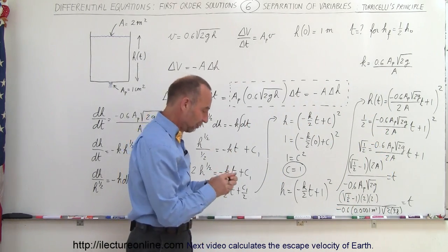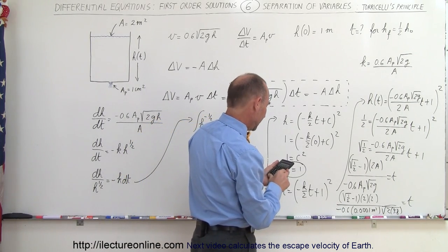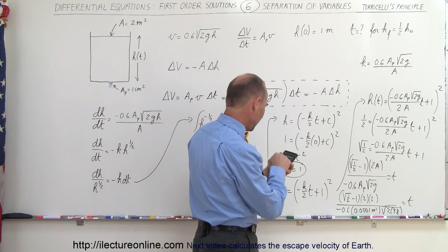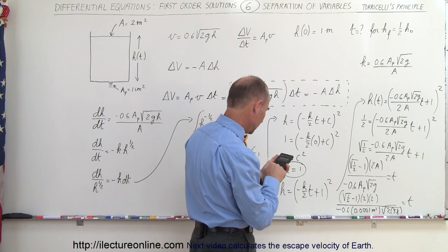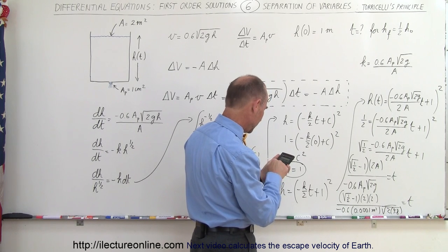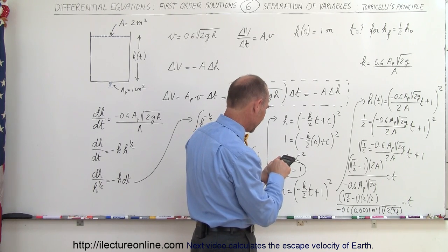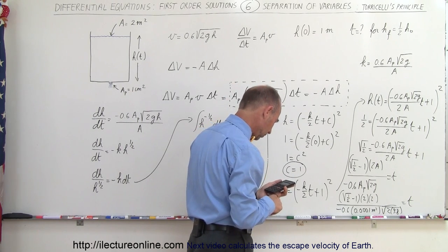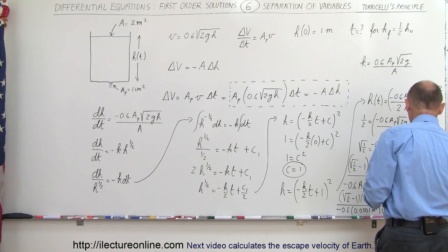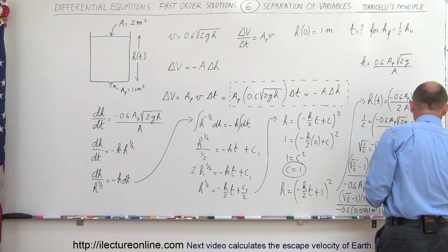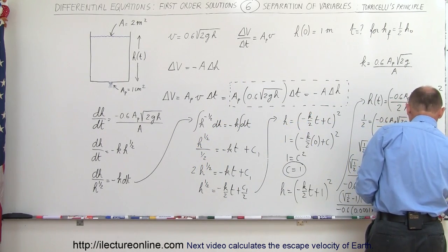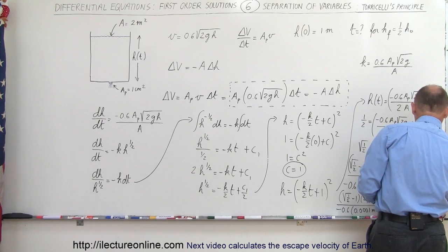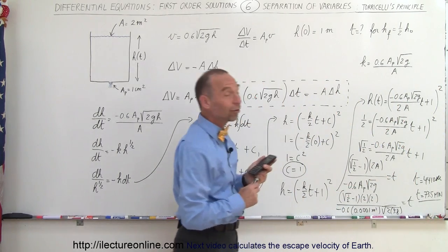Now with a calculator I can solve for that answer. So we have: square root of 0.5, minus one — that equals — times 4 — equals — divide by 0.6, divide by 0.0001, and divide by the square root of 19.6, and it takes 4,410 seconds. So time is equal to 4,410 seconds, and since there are 60 seconds in a minute, dividing by 60 gives us 73.5 minutes. So the time is equal to 73.5 minutes — that's how long it would take for half the water to flow out of that barrel.